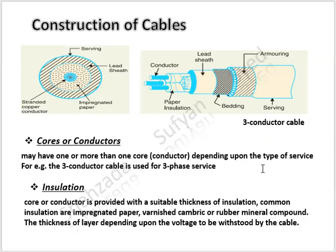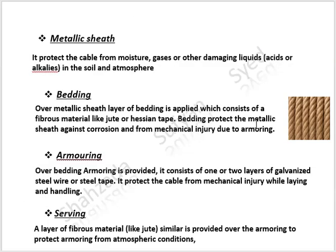The core or conductor is provided with a suitable thickness of insulation. Common insulations are impregnated paper, varnished cambric, or rubber mineral compound. The thickness of the insulation layer depends upon the voltage to be withstood by the cable — for higher voltage, the thickness of insulation will be high, and for lower voltage, less insulation is needed. The metallic sheath protects the cable from moisture, gases, or other damaging liquids such as acids and alkalis which are present in the soil and atmosphere.